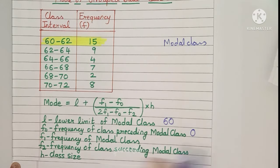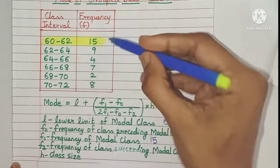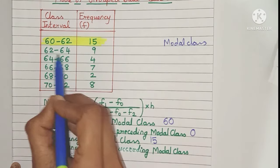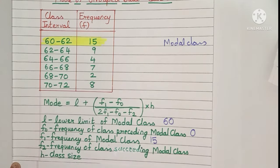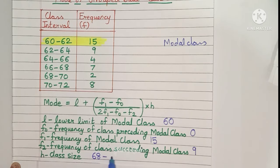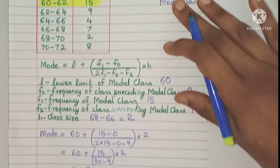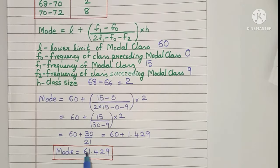F1 is the frequency of the modal class, which is 15. F2 is the frequency of the class succeeding the modal class — that class has a frequency of 9, so F2 = 9. The class size: taking 68 minus 66 gives H = 2. Putting all values into the formula and calculating, the mode value comes out as 61.429.